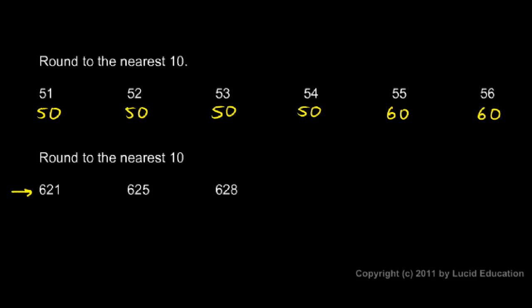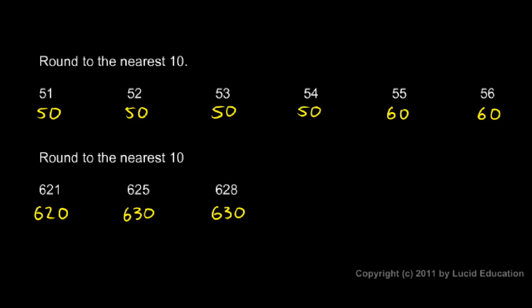In this next row we're also told to round to the nearest ten. We look at the tens place and the next digit — in this case it's a one, which is less than five, so we round down, giving us 620. For 625, we find the tens place then look at the next digit, which is a five, so we round up — 625 to the nearest ten is 630. For 628, the next digit is eight, which is five or higher, so we round up — 628 rounded to the nearest ten is 630.